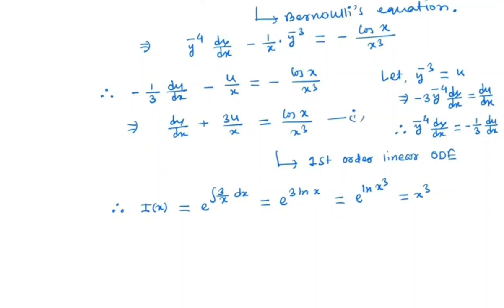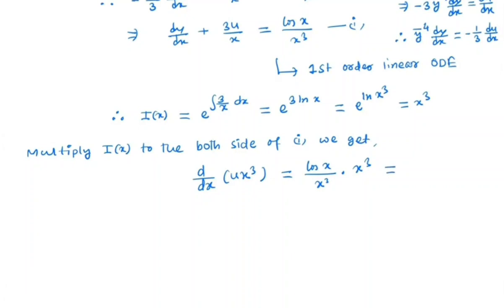Now let us denote this equation by 1. So multiply I(x) to both sides of 1, we get d/dx of u times x cubed is equal to cos x by x cubed times x cubed, which is nothing but cos x. So we get u x cubed is equal to integral cos x dx plus c, which is sin x plus c.